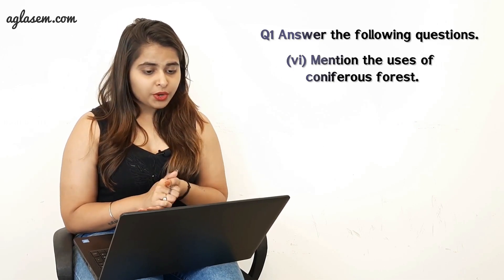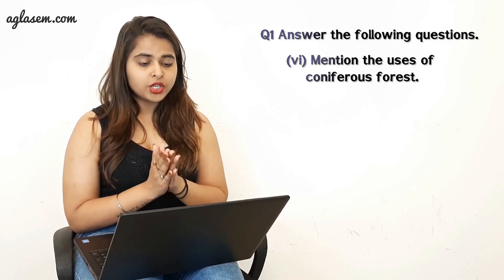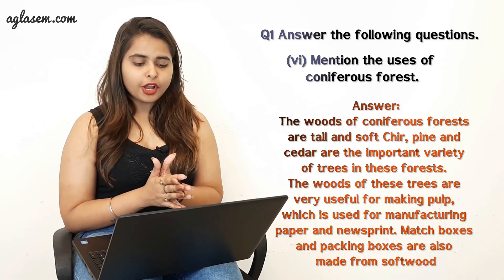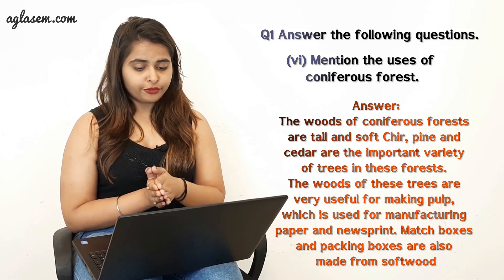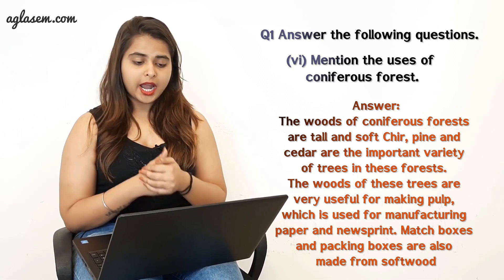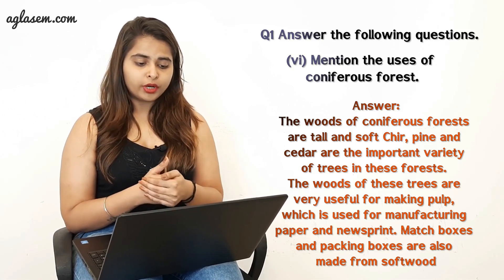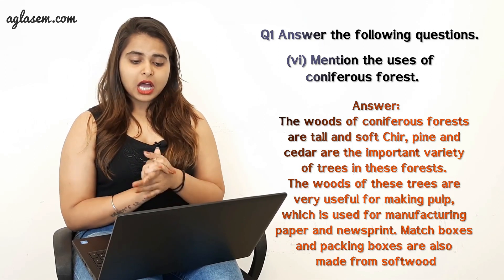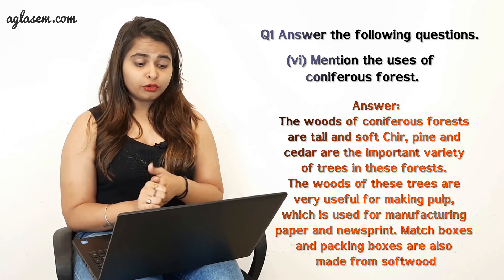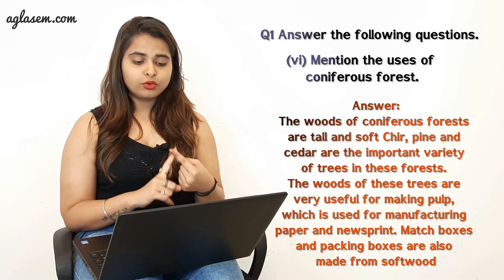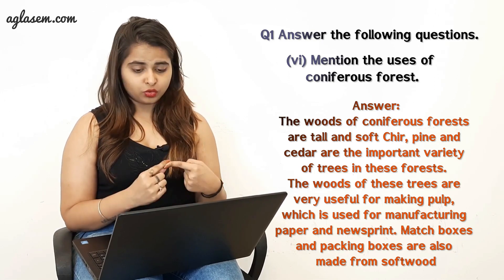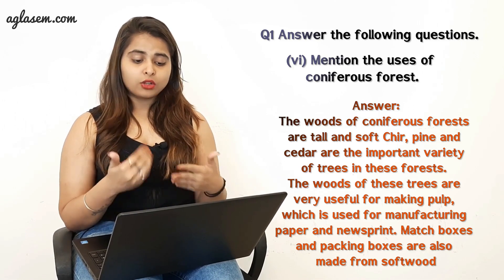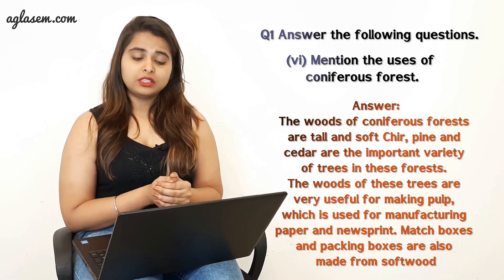The next question asks: mention the uses of coniferous forests. The wood of coniferous forests — tall, soft trees like chir, pine, and cedar — are the most important varieties. The wood of these trees is very useful for making pulp, which is used for manufacturing paper and newsprint. Match boxes and packing boxes are also made from these softwoods.